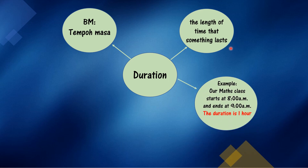For example, our maths class starts at 8am and ends at 9am. So, the duration is 1 hour. Sebagai contoh, kelas matematik mula 8am — 8am ialah 8 pagi — and bertamat pada pukul 9 pagi. So, the duration is 1 hour. 1 jam.